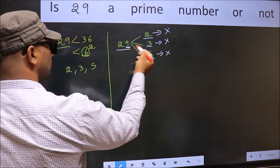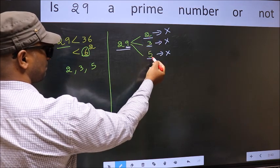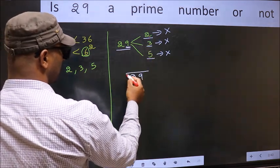So, 29 is not divisible by any of these numbers. So, 29 is a prime number.